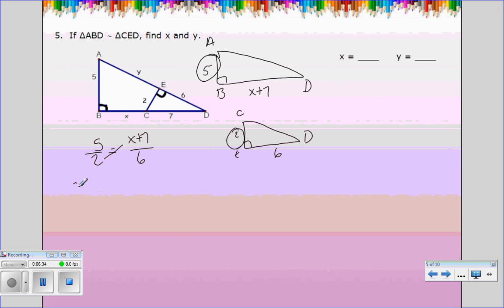The 5 pairs with the 2, so the 5 pairs with the 2 equals the X plus 7 pairs with the 6. So we cross multiply. So I've got 2 times X plus 7 equal to 5 times 6 is 30. So I've got 2X plus 14 equals 30. So if I subtract the 14, I get 2X is equal to 16. Divide both sides by 2, X is 8. So X is 8, so that made that one easy.